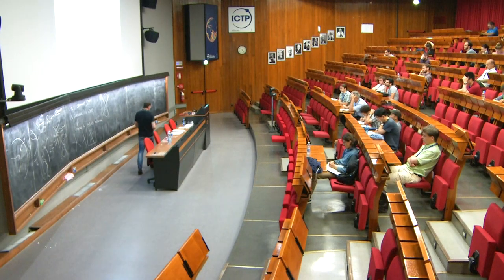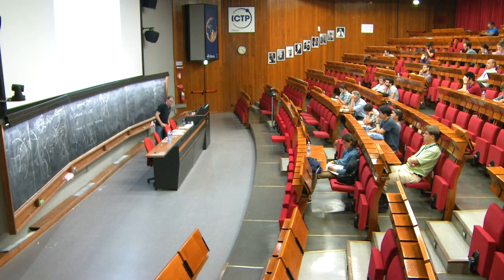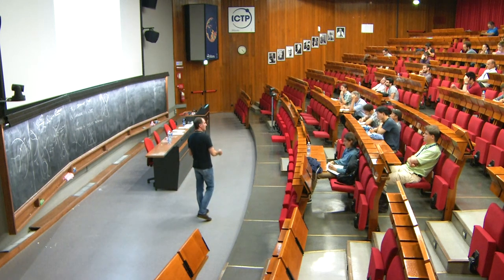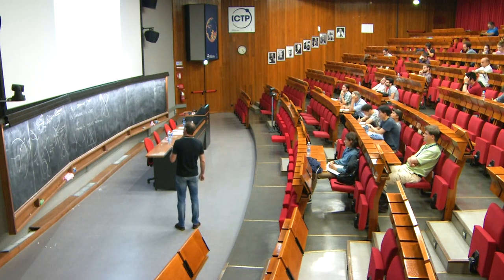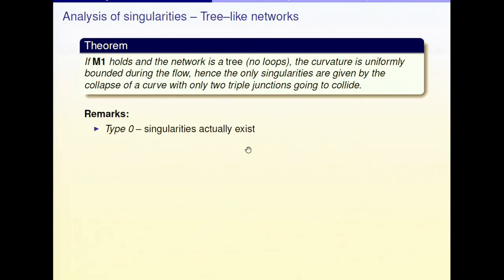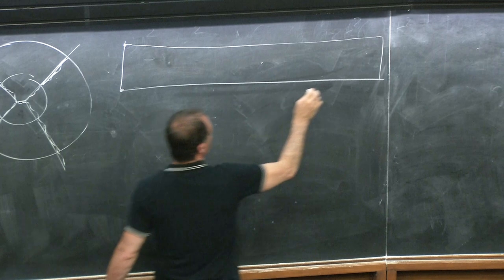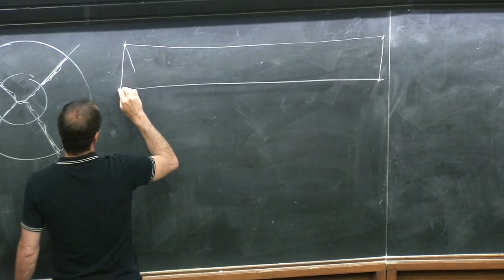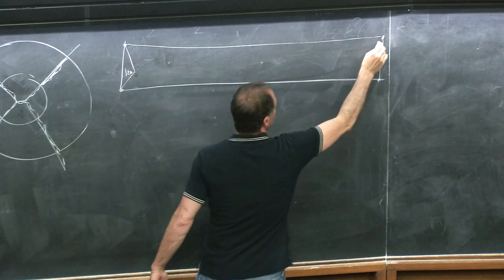This is very rough — otherwise I would spend a lot of time on the technicalities — but this is more or less the idea. The moral: if you get a flat blow-up, the curvature is bounded. A very first consequence is that type zero singularities — singularities with bounded curvature — actually exist. You can imagine they might not, but they must.